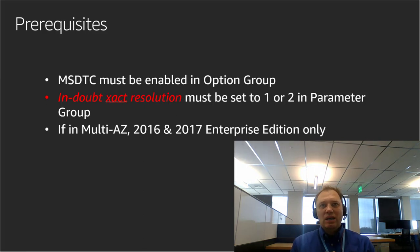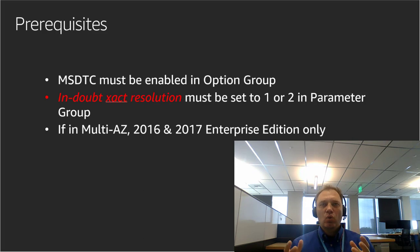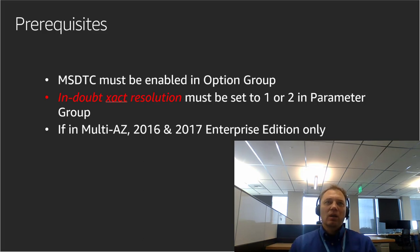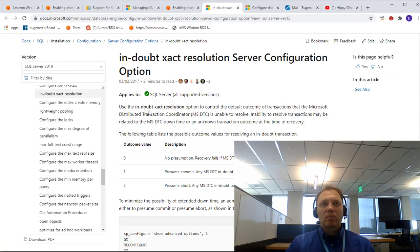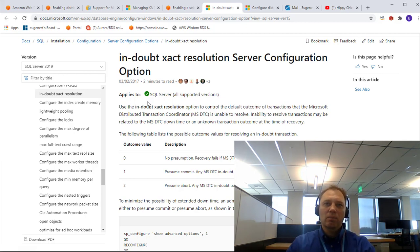Second, in-doubt transaction resolution must be set to 1 or 2 in a parameter group. Without going into too much theory about two-phase commit, it's sufficient to say that the in-doubt transaction resolution setting controls the default outcome of a transaction that cannot be resolved by MSDTC. Three values are supported: zero (no presumption), one (presume commit), and two (presume abort).